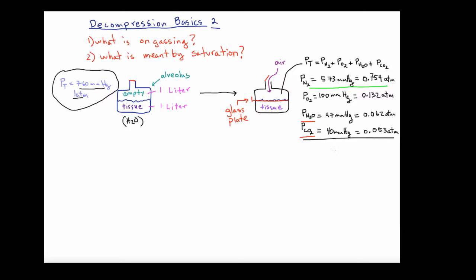Before we get into the nitty-gritty, I just want to pause for a second. You may want to pause the video and calculate the sum of these partial pressures — you'll see that they total 760 millimeters of mercury. Because I'm going to go back and forth between millimeters of mercury and atmospheres, I also provided the partial pressures in ATMs, and they're going to sum to one ATM.